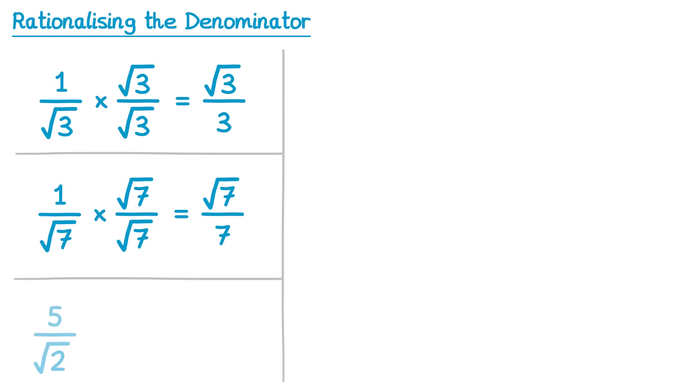Let's try another. So this time we've got a 5 on the top, not a 1 anymore. Since there's a square root 2 on the bottom, we're going to multiply by square root 2 over square root 2. 5 times square root 2 is 5 root 2, and on the bottom, square root 2 times by itself is 2.